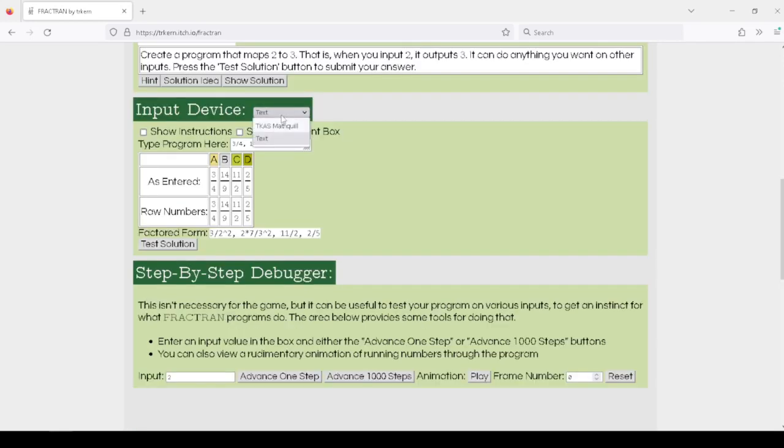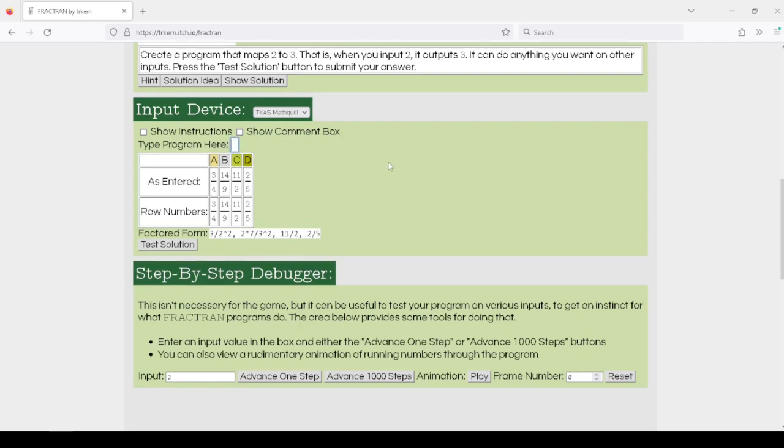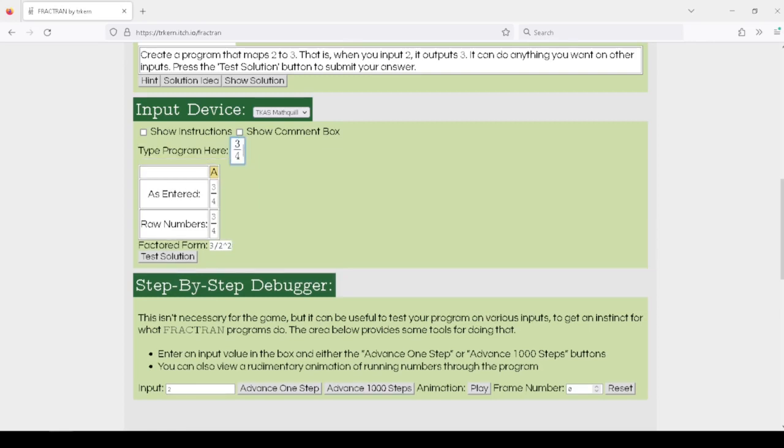I've also added an experimental MathQuill entry box. This uses the MathQuill math entry system and my own personal parser to turn that into a list of fractions. Here you can enter your fractions as a comma-separated list, but you need to be a little bit careful.